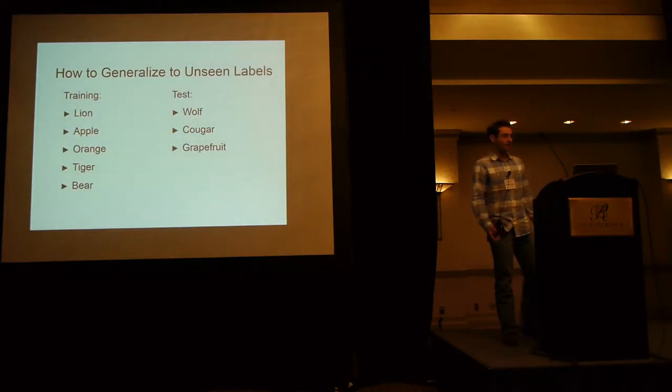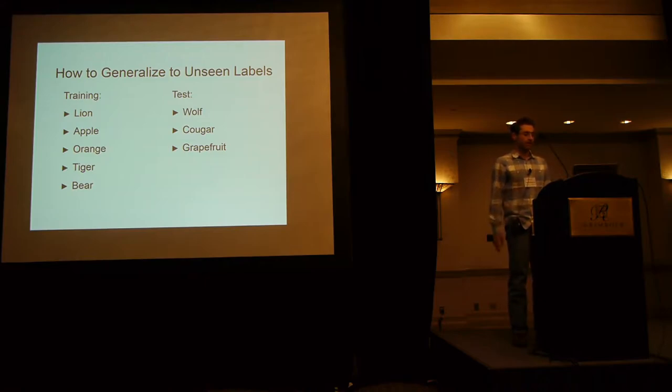Now what we're asking is whether it's possible to generalize to unseen labels. So let's say we train on lions, apples, oranges, tigers, and bears, and we want to generalize to wolves, cougars, and other classes. So this is an ill-posed problem, because the classifier doesn't know anything about the classes that it hasn't seen during training.